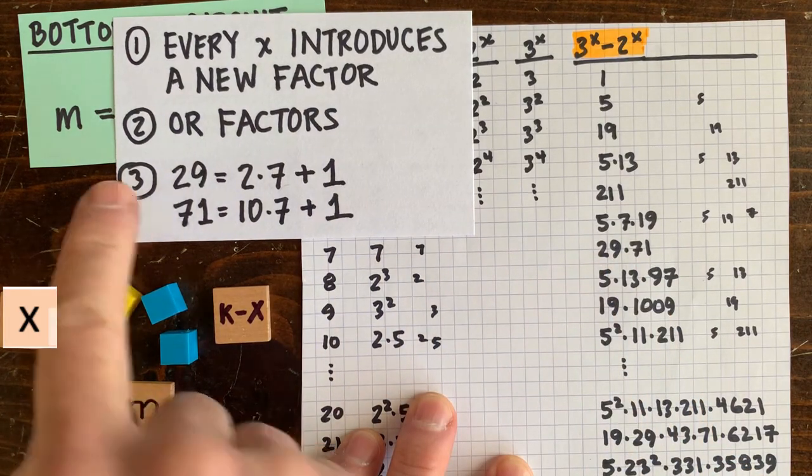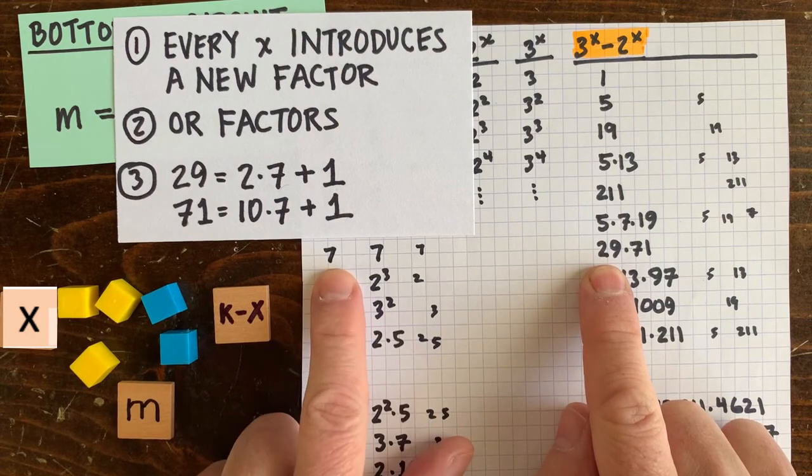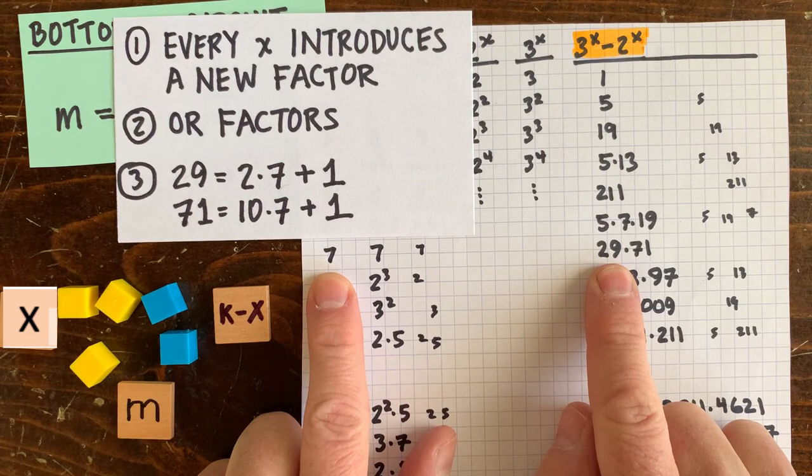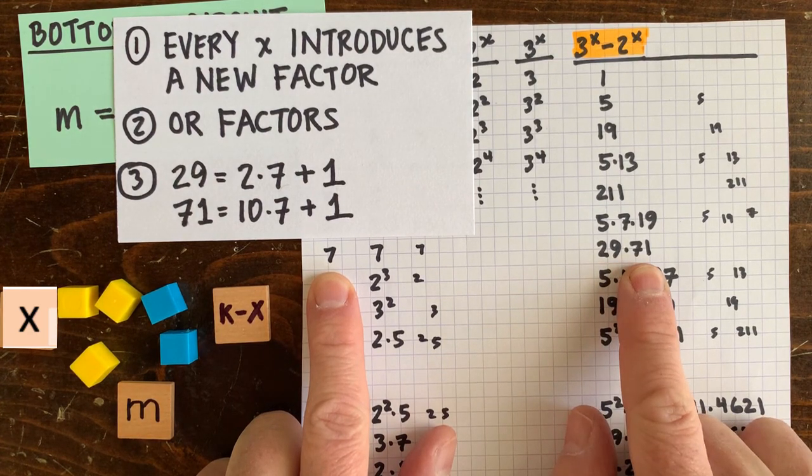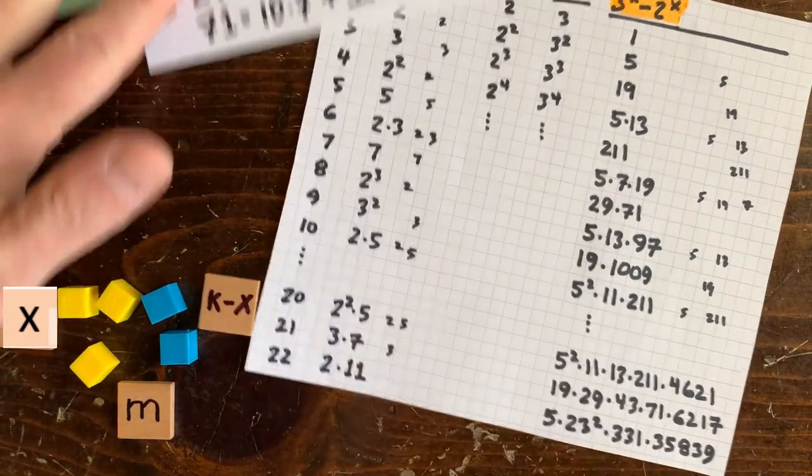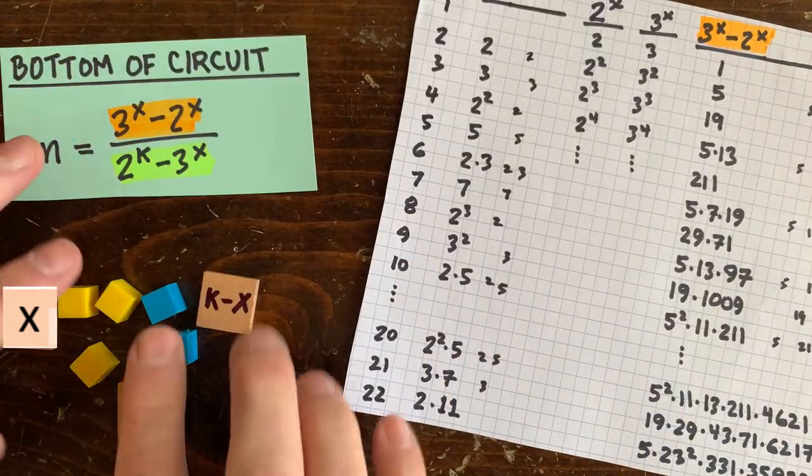Third, and this is kind of weird, when x is prime, its factors are even multiples of x with an extra 1 added. For example, 29 is 2 times 7 plus 1, and 71 is 10 times 7 plus 1. Not sure what to make of that last fact, but there are definitely patterns here.